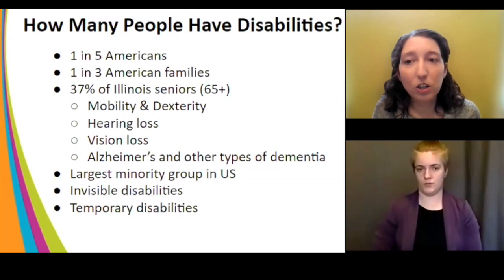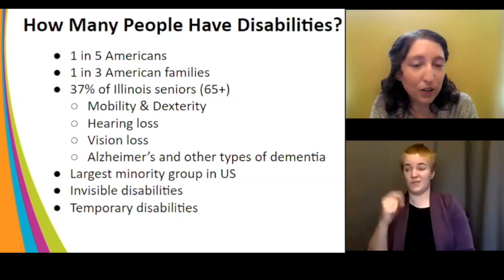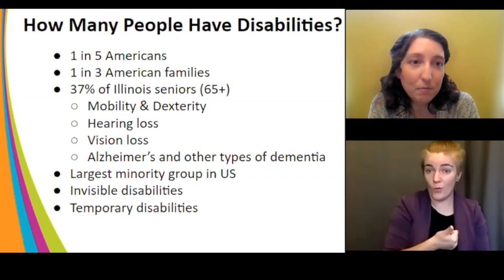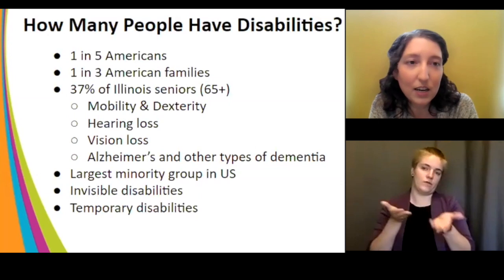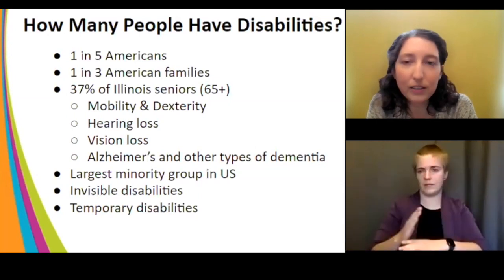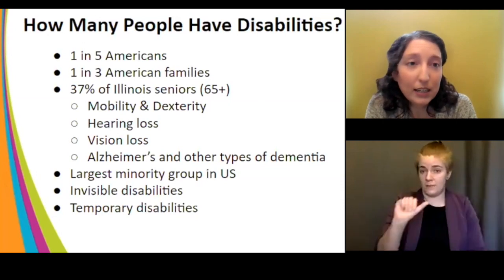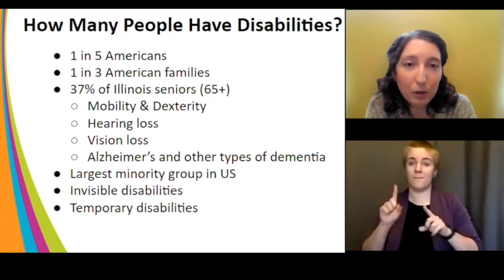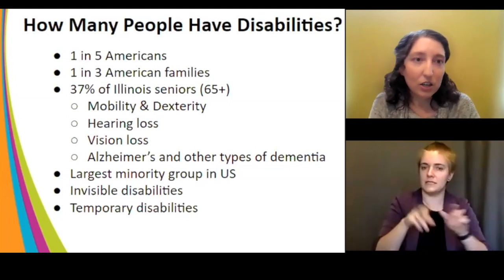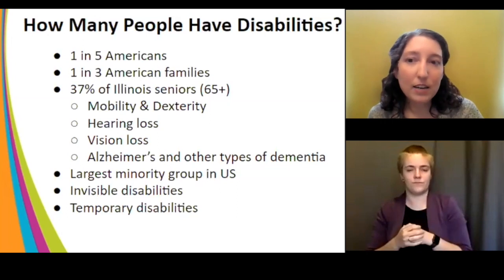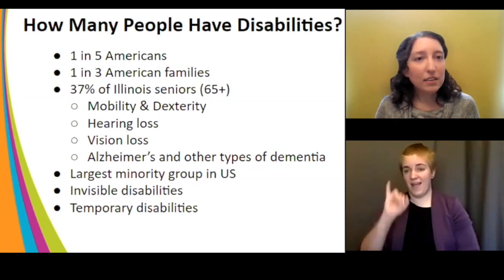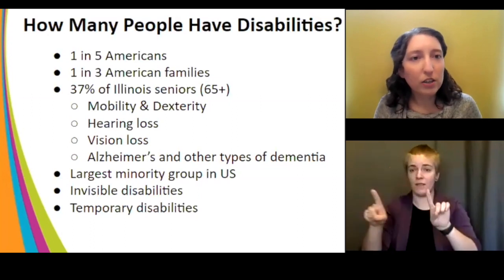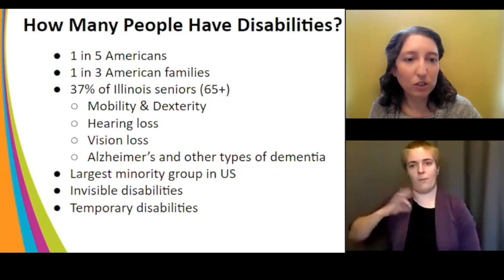People with disabilities are the largest minority group in the United States. It's also the only minority group that anybody can enter at any point in their life. It's a very fluid identity. We also want to talk about temporary disabilities — being accessible doesn't just mean you're helping people who've had a disability from birth; you're also helping people who maybe broke their leg last week and need an accessible seat at your theater. Disability is a much broader category when you think about all the people who would benefit.